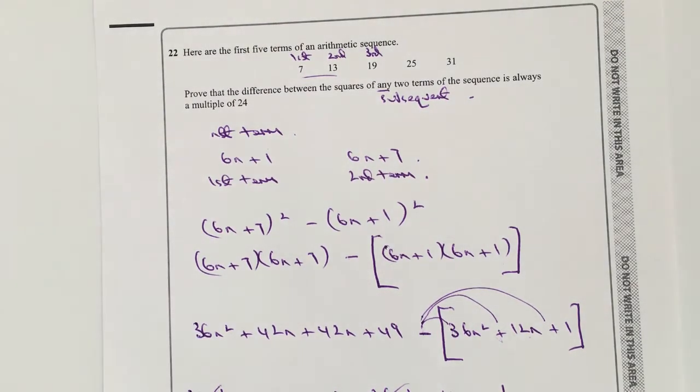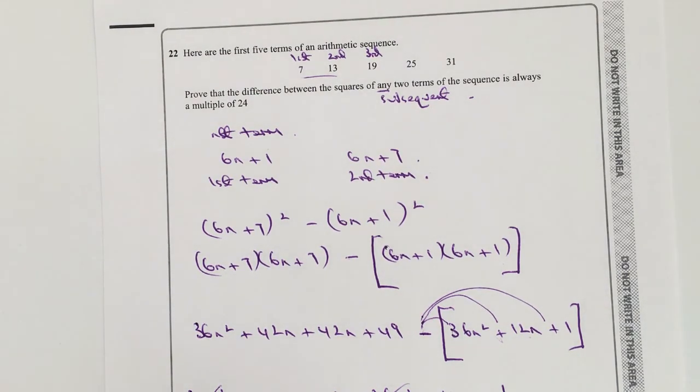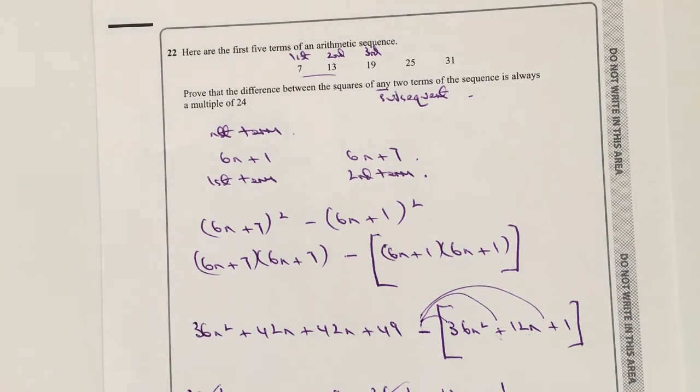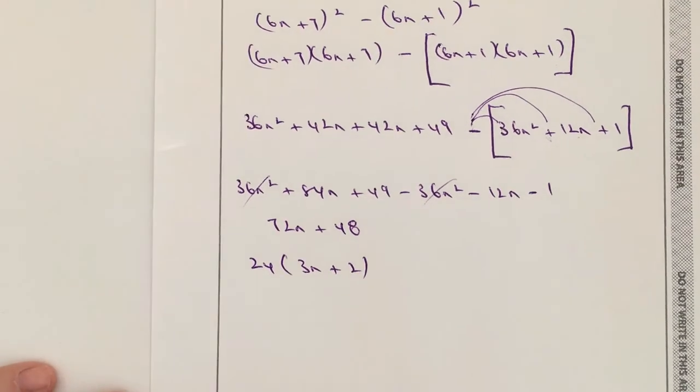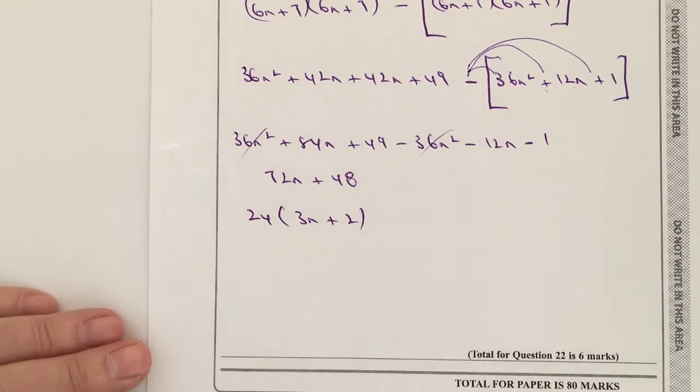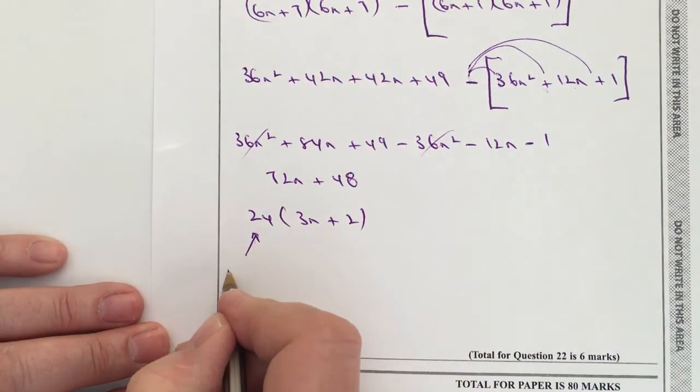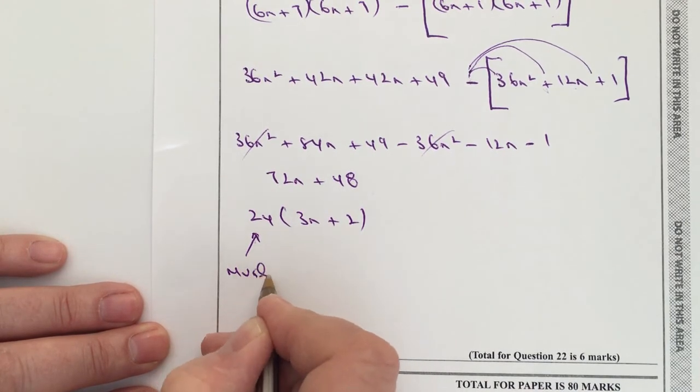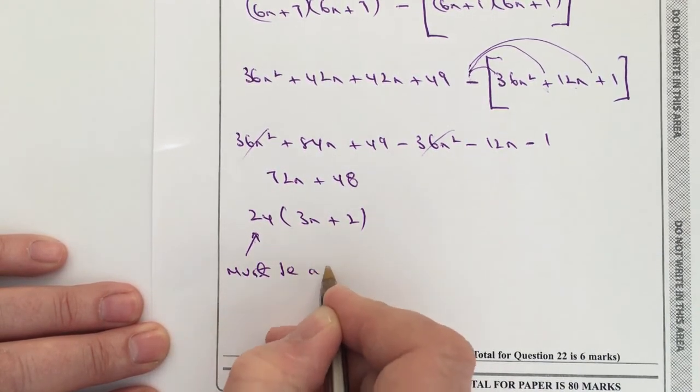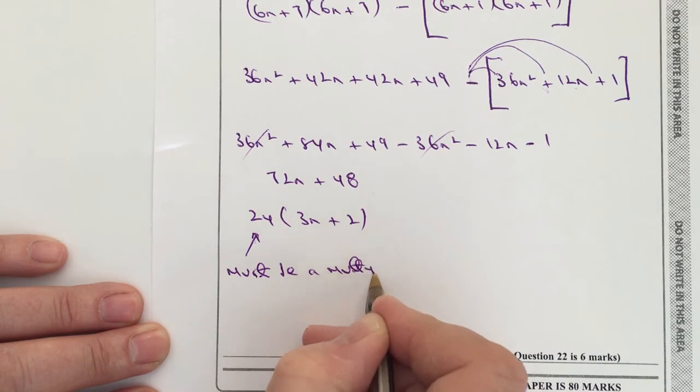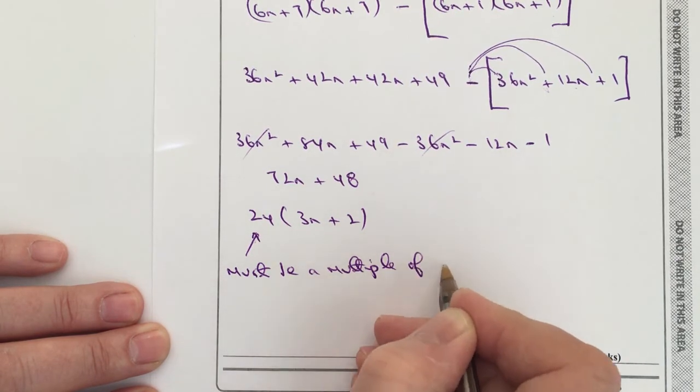So that's really the key point of this: what I can do then is I can factorize this for 24. So if I factorize this for 24, I get 3n plus 2. Now what that means then is that it must be a multiple of 24.